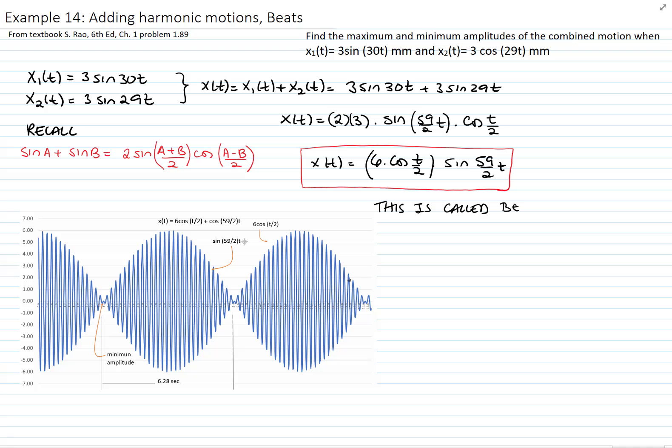And it occurs only when the two frequencies that we are adding are very similar. As you see, the amplitude is represented by this red line that I am drawing. And that's the 6 cos(t/2) function.